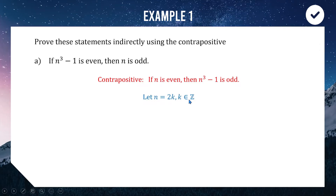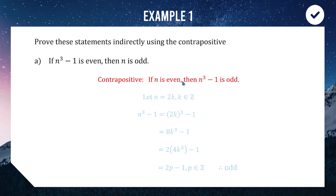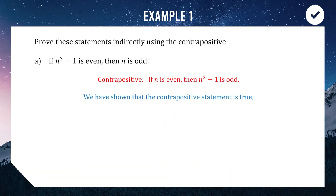We start with n being even, so n = 2k where k is an integer. We cube this and subtract one, so n³ − 1 = 8k³ − 1. Our goal is to show this result is odd — two times something plus or minus one. We can factor a two out of the eight: two times (4k³) minus one, so we have two times something minus one, which is an odd number. We have proved the contrapositive: if n is even then n³ − 1 is odd. Because we have proven the contrapositive is true, the original statement is also true.